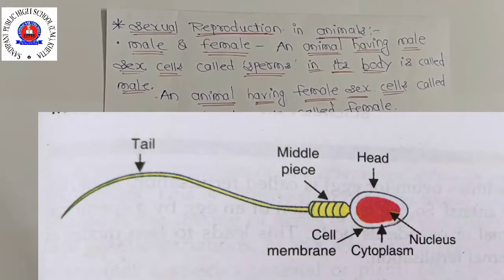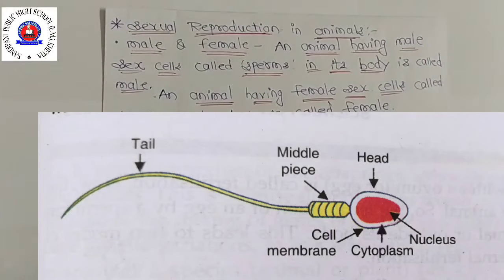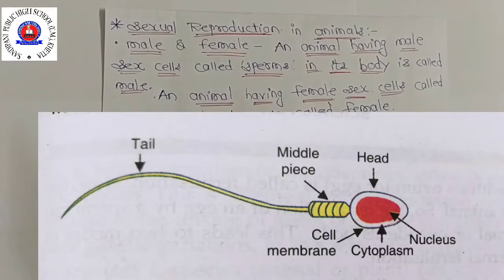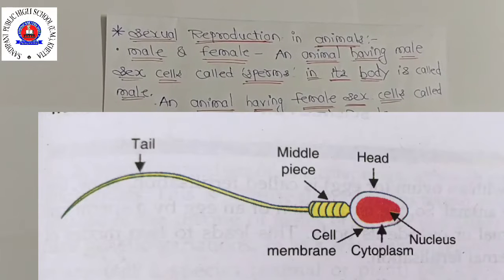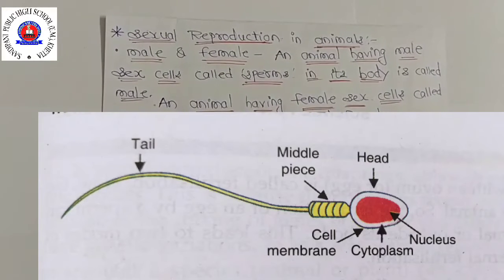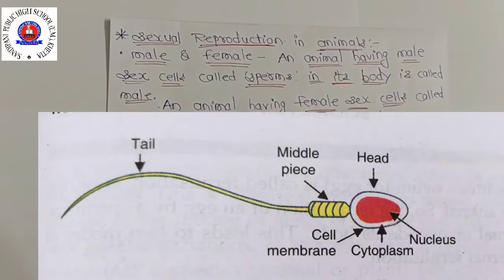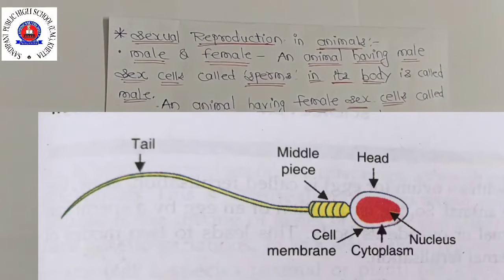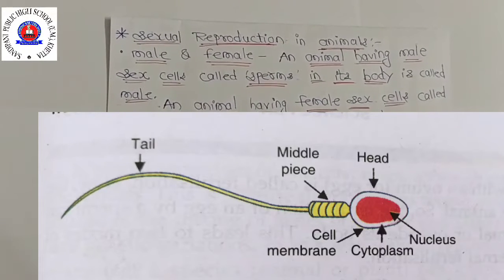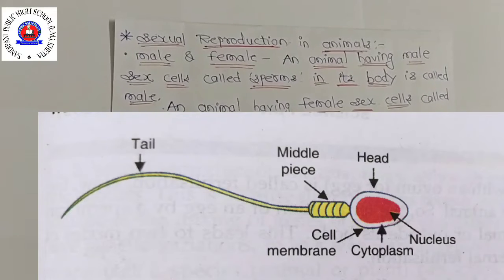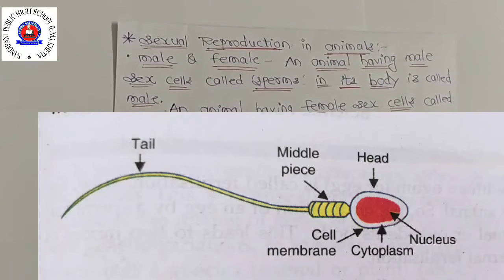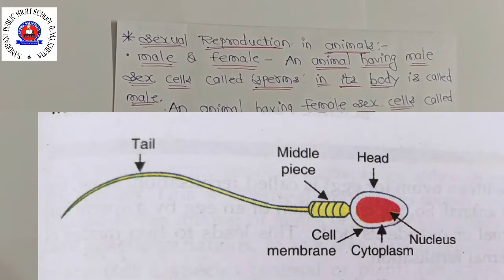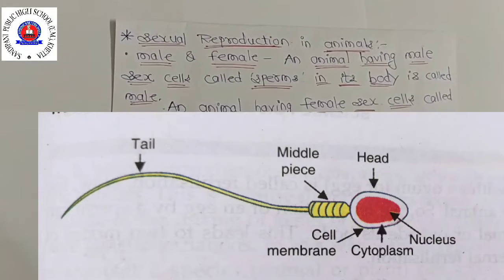A sperm is about 0.05 mm long. A sperm has a head, a middle piece, and a tail. A sperm is a single cell with a nucleus, cytoplasm, and cell membrane. This figure shows a highly enlarged scale of a sperm present in the male body.